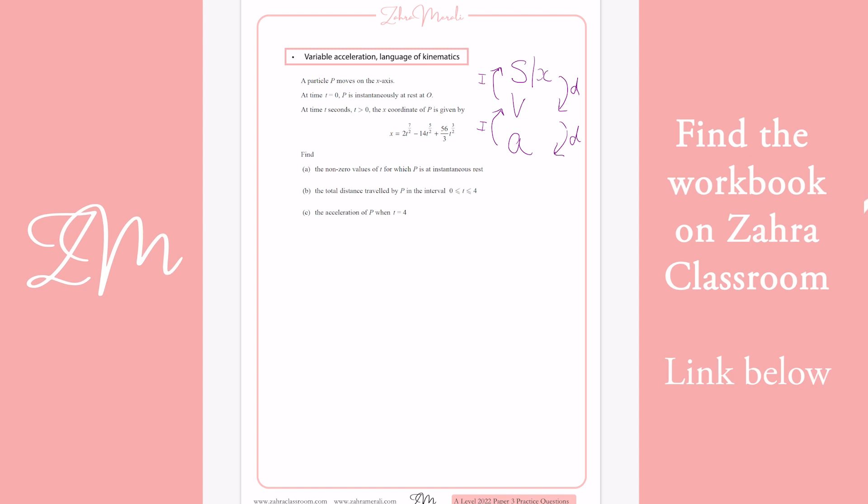We've got this x which represents the displacement. We want to know when something's at rest. When something's at rest, the velocity is zero. So to go from x to v, we differentiate. So let's differentiate this. So dx/dt. Remember to differentiate, you bring the value down, you take one away from the power.